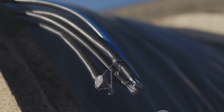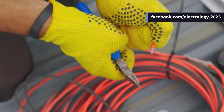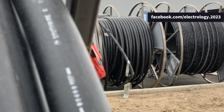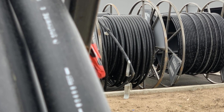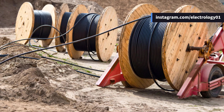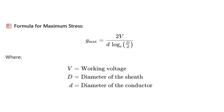So today, let's uncover the science behind how engineers decide the most economical conductor size — the one that keeps both your cable and your wallet safe. In a cable, the maximum electrical stress doesn't occur in the middle, but right at the surface of the conductor. For the safe working of a cable, the dielectric strength of the insulation must be greater than this maximum stress. The formula for maximum stress is: Gmax = 2V / (d × log_e(D/d)), where V is the working voltage, D is the diameter of the sheath, and d is the diameter of the conductor.